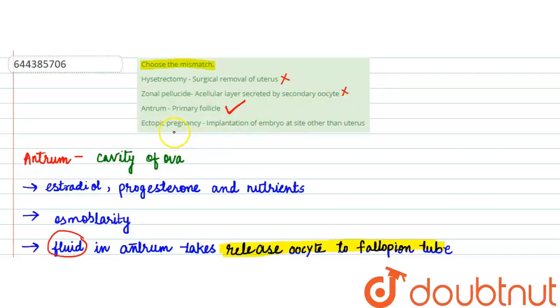And ectopic pregnancy refers to all those pregnancies that are implanted at a site other than the uterus. So in ectopic pregnancy, the implantation is happening at another site instead of the uterus. With this we are done for the question. Hope you have understood it well.